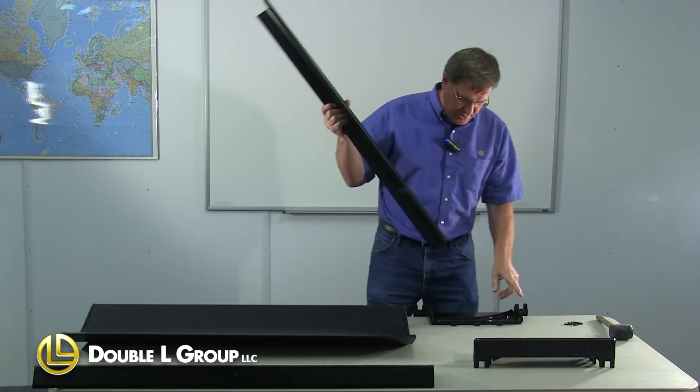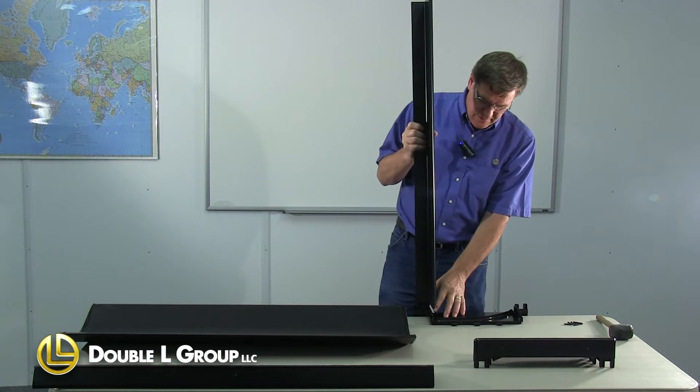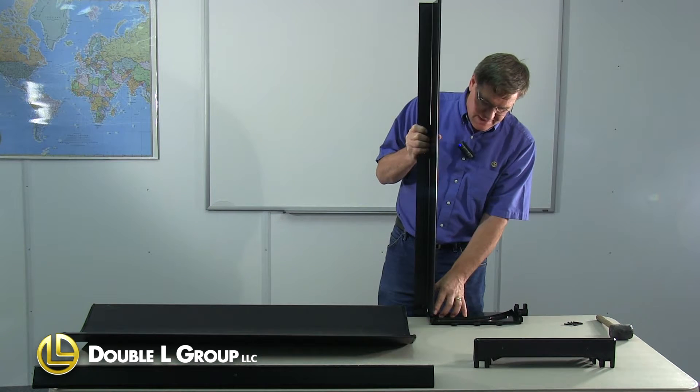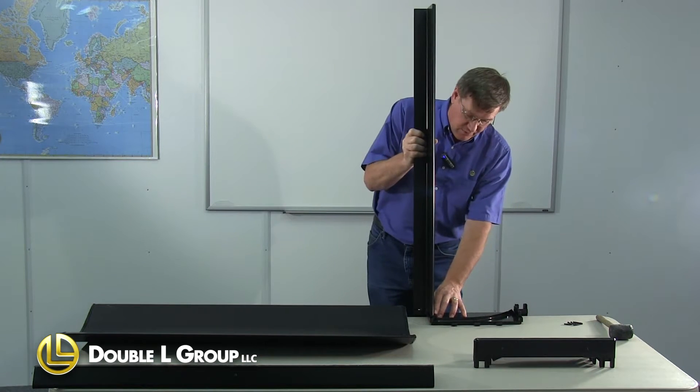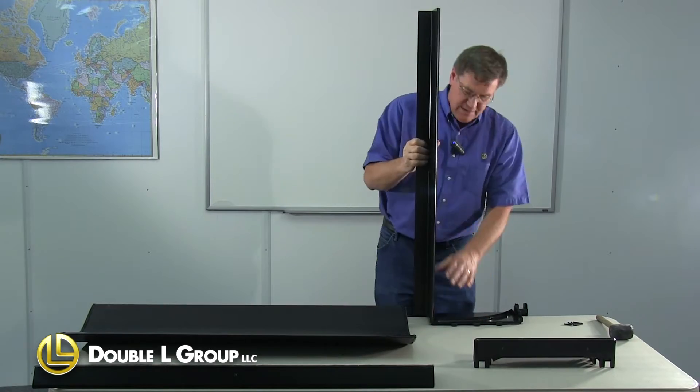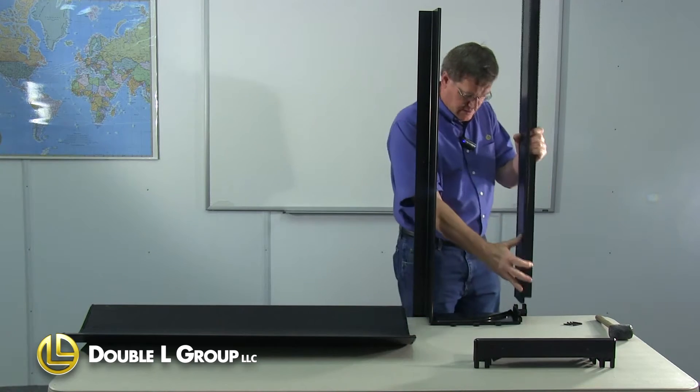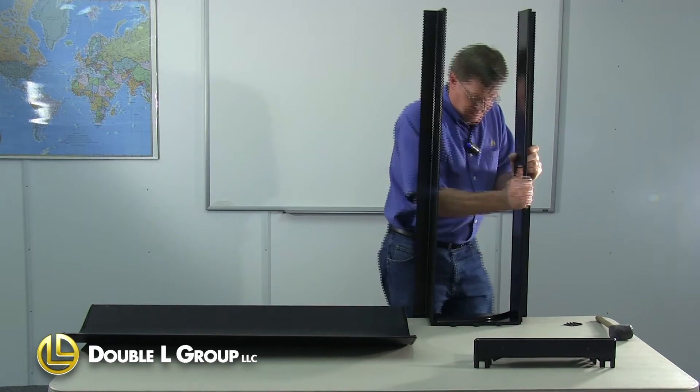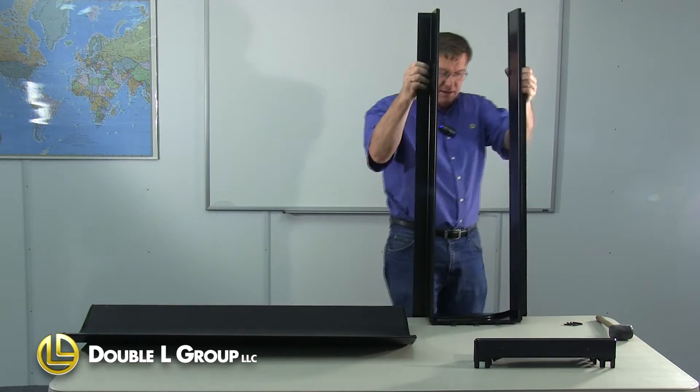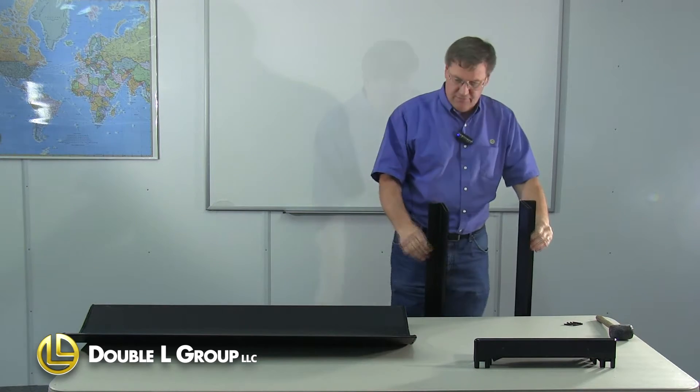You determine which is the bottom of the cap here. You can tell that it'll really only go together one way, so slide that down into position. Take the other half, slide it down into the end cap, and set it out on the floor.